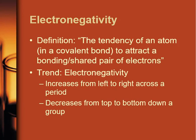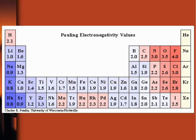The trend is that electronegativity increases from left to right across a period, except for the noble gases — they do not form covalent bonds, so they do not have electronegativities. It decreases from top to bottom as you go down a group. The only exception is hydrogen, which if you can visually picture as sitting somewhere over near carbon when thinking of electronegativity, that is a good place for it.